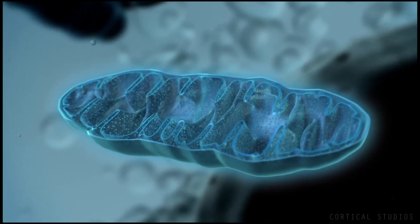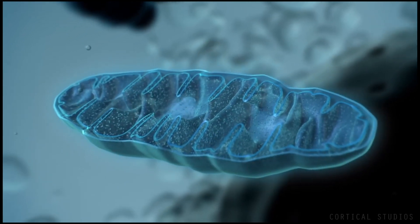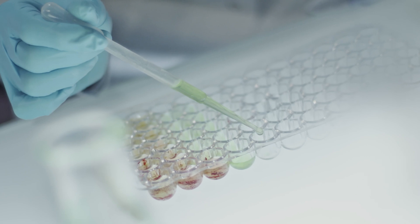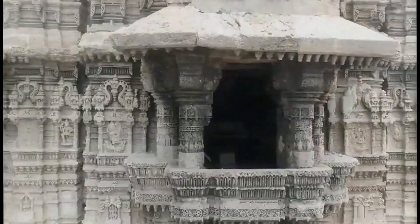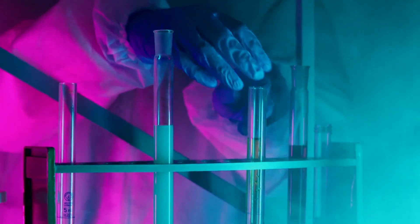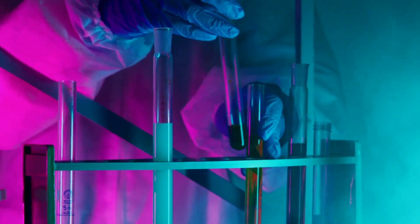This long half-life makes protactinium 231 valuable for dating geological samples, particularly those dating back tens of thousands of years. The decay chain of protactinium also includes other isotopes, each with its own unique properties and potential applications.